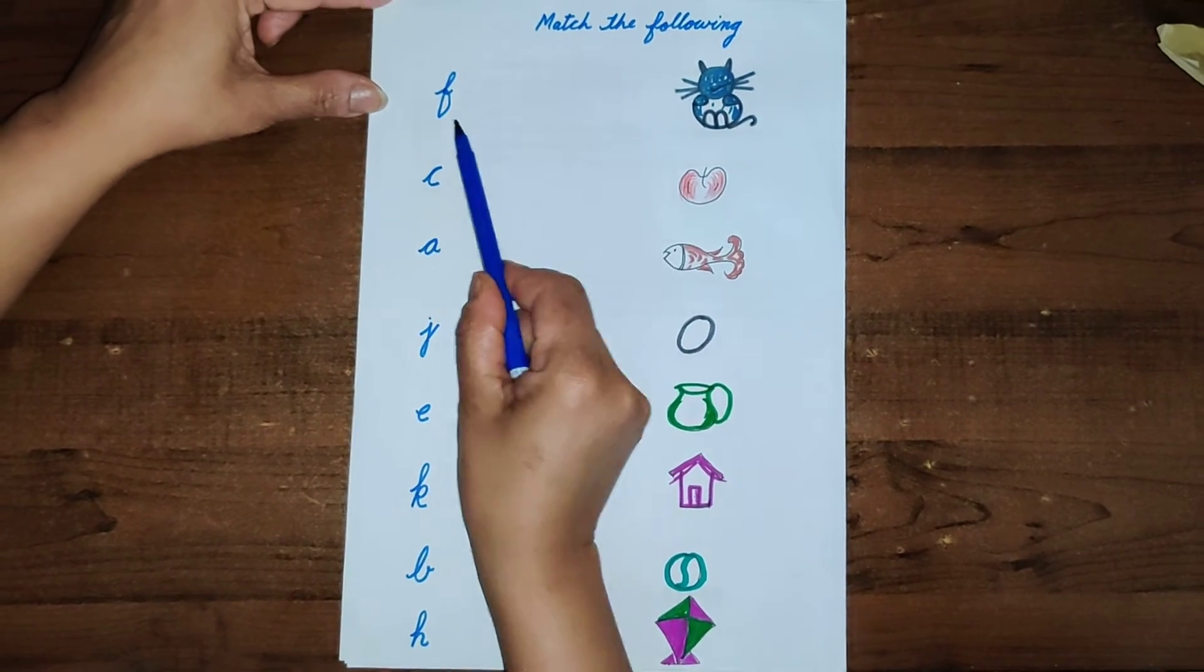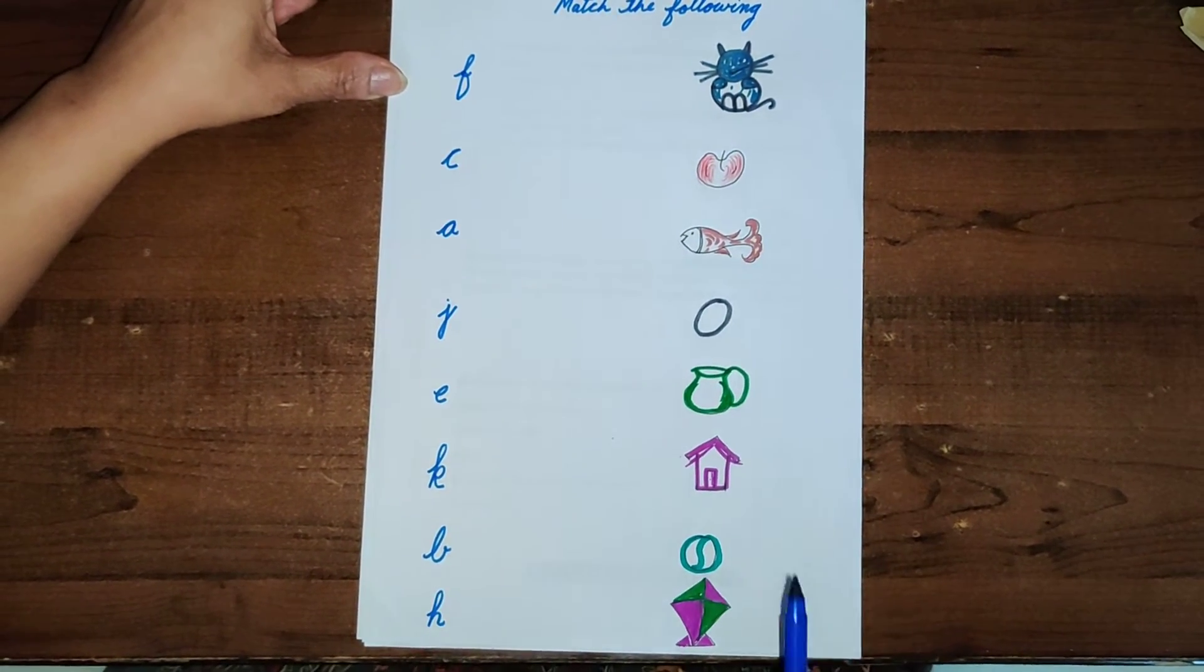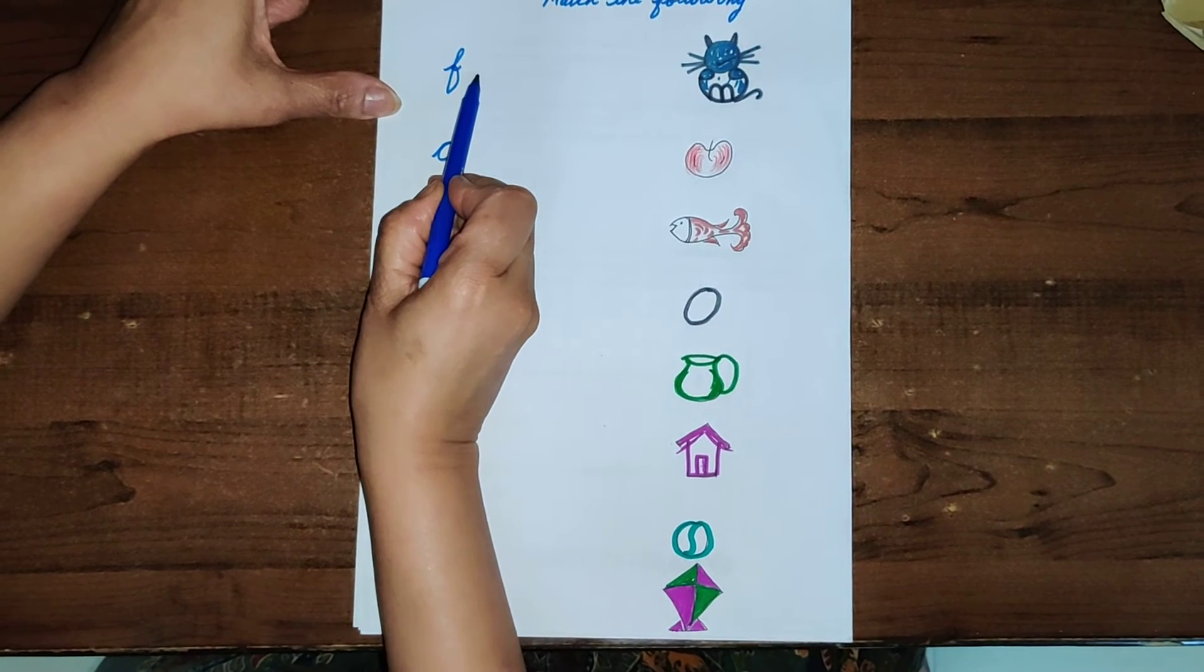It's F. We have to find out where is the fish. Here is the fish, so let's draw a line from F to fish. Now it's matched.